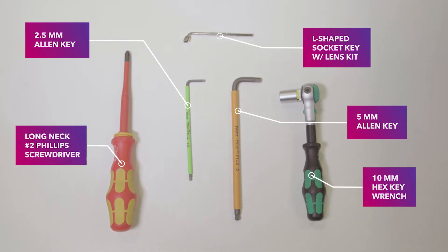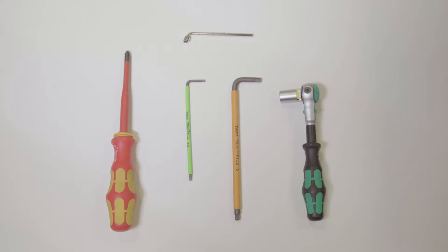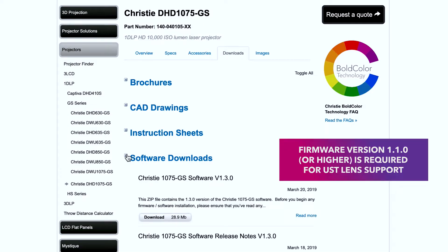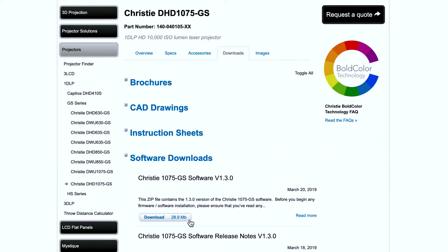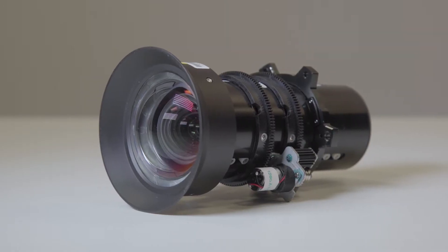First ensure you have all the required tools on hand to install the UST lens. Next you need to ensure your projector firmware is version 1.10 or higher. To download the latest firmware visit ChristieDigital.com.